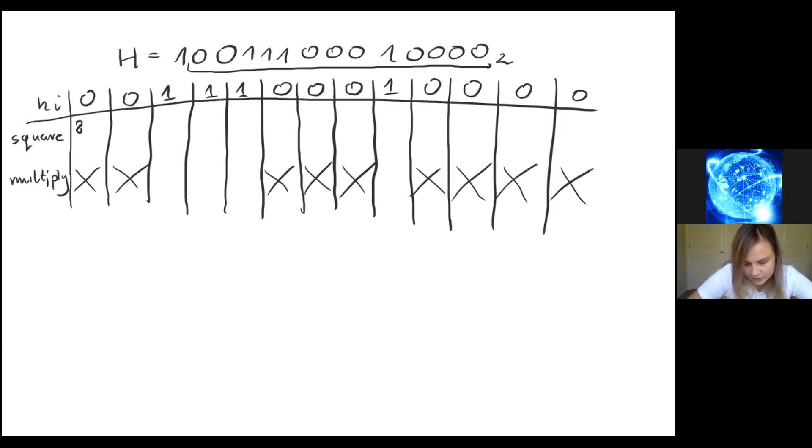So we start here. We compute 823 squared. This is congruent to 329. Of course everything is modulo, so actually here I'm computing 823 squared modulo 1,000. But we don't have much space in the table, so everything is modulo 1,000.